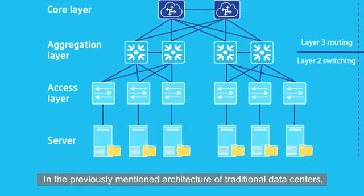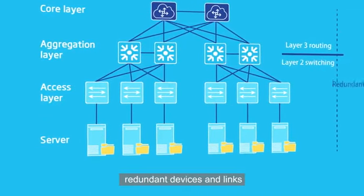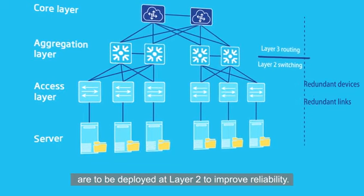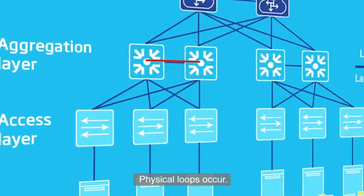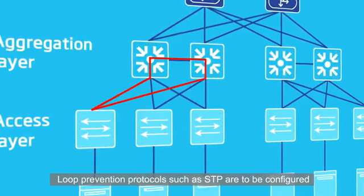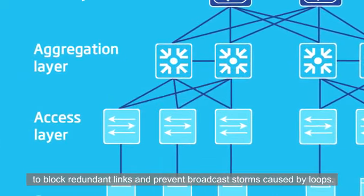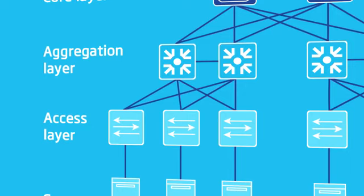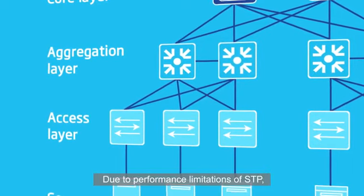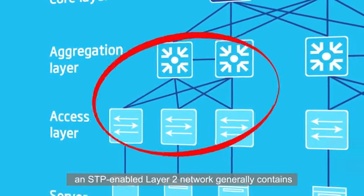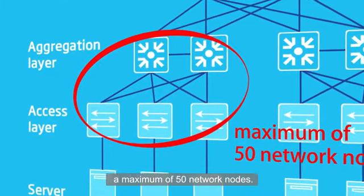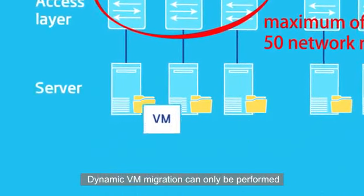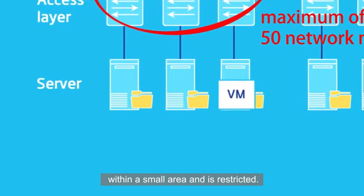In the architecture of traditional data centres, redundant devices and links are deployed at layer 2 to improve reliability, causing physical loops. Loop prevention protocols such as STP are configured to block redundant links and prevent broadcast storms caused by loops. Due to performance limitations of STP, an STP-enabled layer 2 network generally contains a maximum of 50 network nodes. Dynamic VM migration can only be performed within a small area and is restricted.